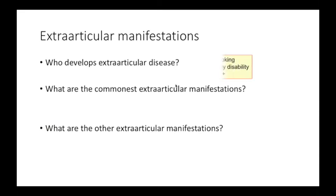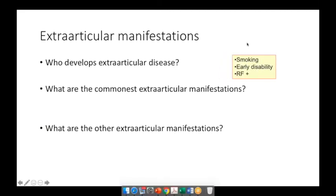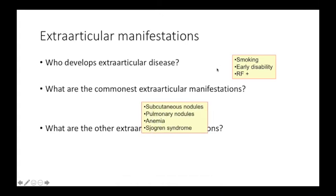Regarding extra-articular disease, it is usually individuals who are smokers, have early disability, or are rheumatoid factor positive — specifically in rheumatoid arthritis — who are more likely to develop extra-articular disease. The commonest extra-articular manifestations in rheumatoid arthritis include subcutaneous nodules, pulmonary nodules, anemia, and Sjögren's syndrome.